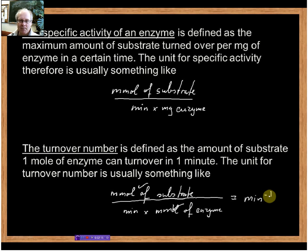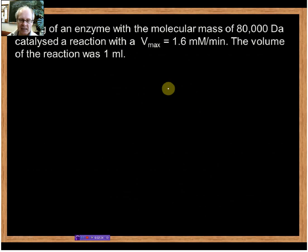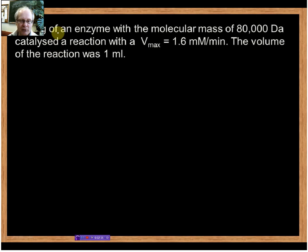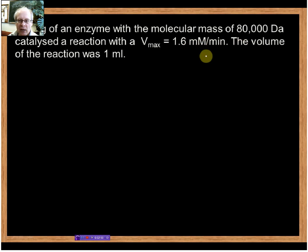Now usually this is quite abstract, and therefore I think the best idea is to do this on an example. So here is a typical example from which we can calculate the specific activity and the turnover number. We used 0.5 milligram — half a milligram — of an enzyme. We know the molecular mass of this enzyme, so that's 80 kilodalton. And we measured a Vmax of 1.6 millimolar per minute, and we carried out our reaction in a total of 1 milliliter. So let's calculate the specific activity in the first place.